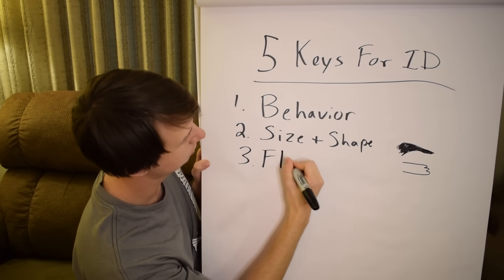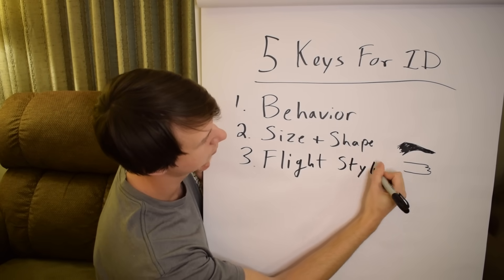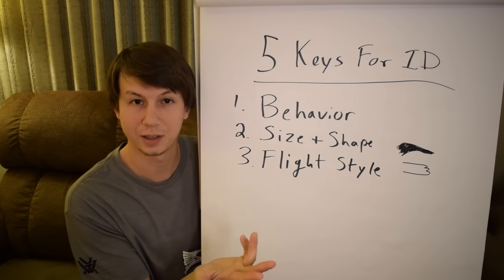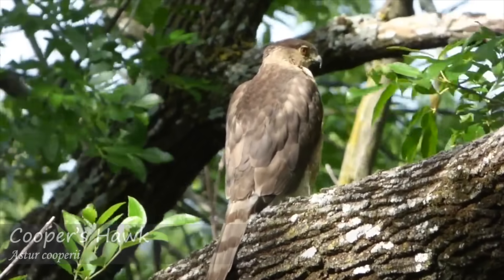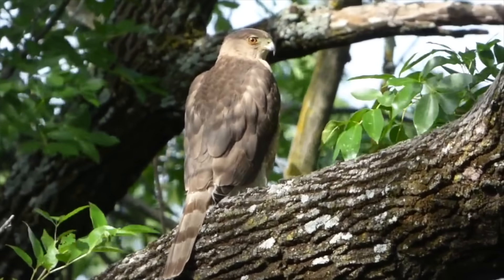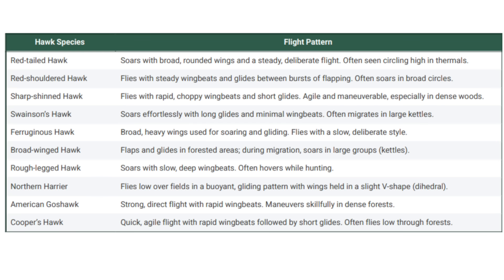Number three is flight style. If you see a bird flying through your yard at fast speed, it's likely Cooper's or sharp-shinned — probably not a red-tailed hawk or open-field species. If you see a couple birds lazily soaring, it's most likely buteos, although during migration you do have sharp-shinned and Cooper's hawks that will migrate and soar as well. Flight style can tell you a lot about the different species and also help rule out others.